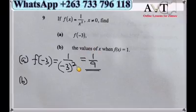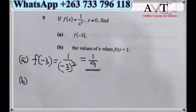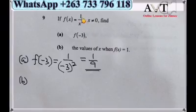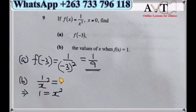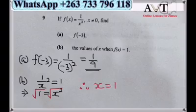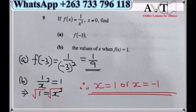Question 9: f(x) = 1/x². For part a, find f(−3): replace x with −3, giving 1/(−3)² = 1/9. For part b, solve f(x) = 1: set 1/x² = 1, multiply both sides by x², giving x² = 1. Taking the square root gives x = ±1, so x = 1 or x = −1.